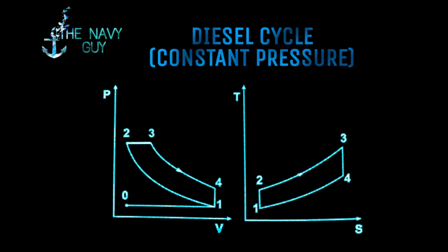Now let's talk about the next cycle, that is diesel cycle or constant pressure cycle. Let's talk about the processes involved. From 0 to 1, charging of fresh air takes place. From 1 to 2, air is compressed isentropically. From 2 to 3, heat is added at constant pressure. That is why it is called a constant pressure cycle.